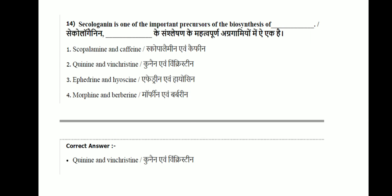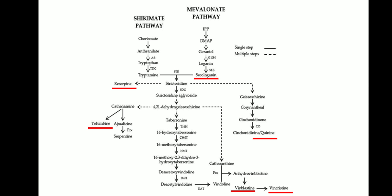Question 14: secoiridoid (secoologonin) is one of the important precursors of the biosynthesis of which compounds? Options are scopolamine and caffeine, quinine and vincristine, ephedrine and hyoscine, or morphine and berberine. The correct answer is option two: quinine and vincristine. Secoologonin is a precursor of quinine and vincristine.